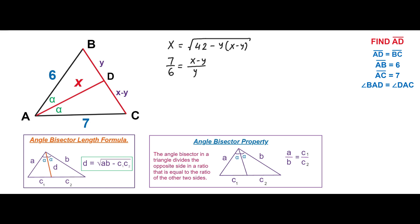7 over 6 is equal to X minus Y over Y. So all we need to do here is to solve this system for X.